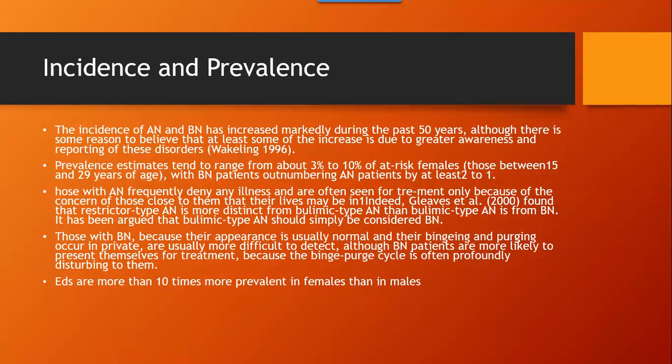The incidence of anorexia and bulimia has increased markedly during the past 50 years, although there is some reason to believe that at least some of the increase is due to greater awareness and reporting of the disorders. Prevalence estimates tend to range from three to ten percent of at-risk females — those between 5 and 29 years of age — with bulimic patients outnumbering anorexic patients by at least two to one.